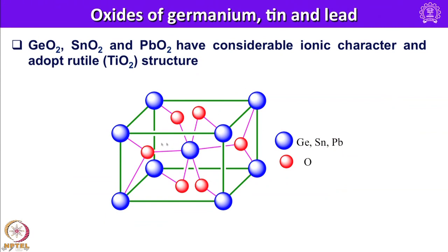The oxides of germanium, tin, and lead are very similar to the rutile structure. These group 14 elements such as germanium, tin, or lead are essentially octahedrally surrounded by 6 oxygen atoms, whereas oxygen is tri-bridging in this fashion. The 6-coordinated metal and 3-coordinated oxygen is the common feature of the rutile structure.